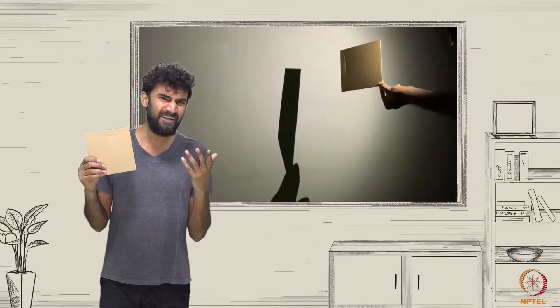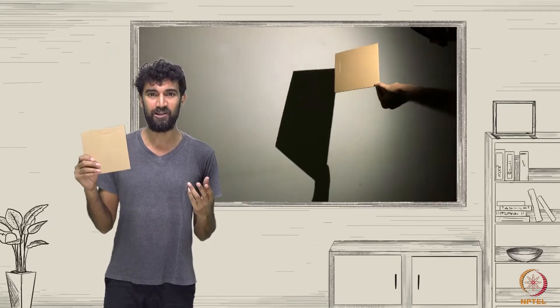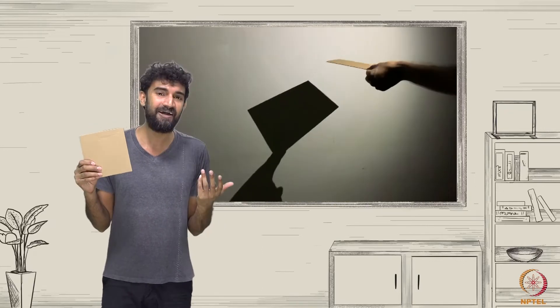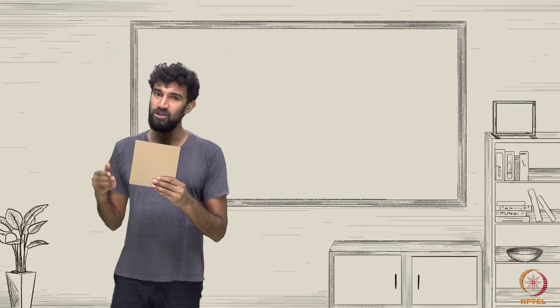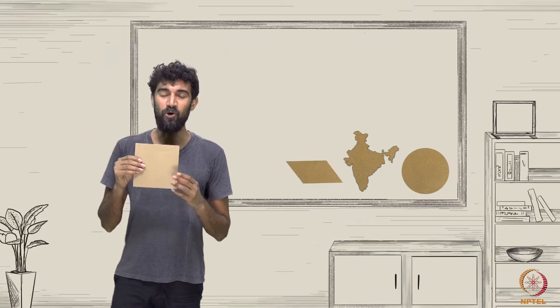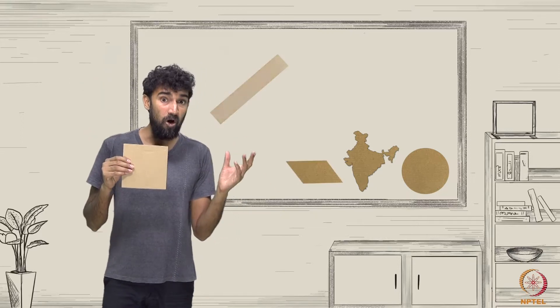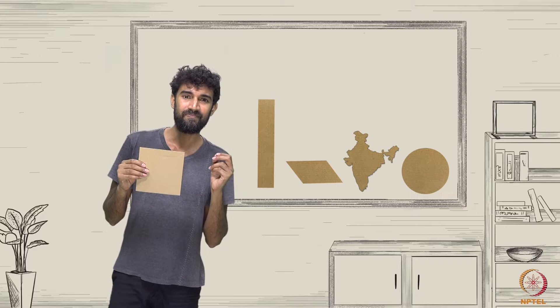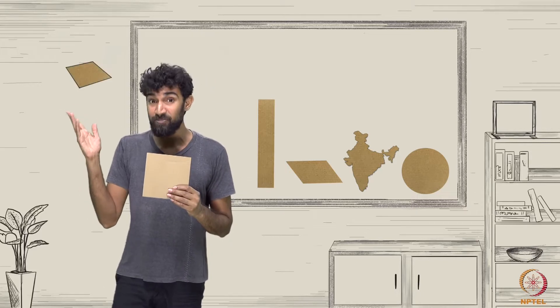In other words, what can the shadow of a square look like? And what can't it look like? Can the shadow of a square look like a circular disc? Can it look like a map of India? Can it look like a rhombus or a long rectangle? Or what about this arbitrary quadrilateral?